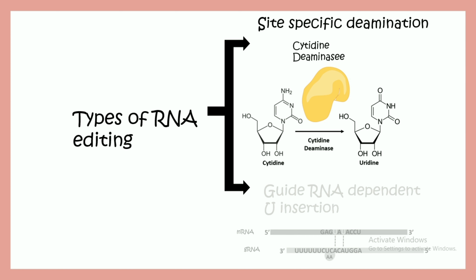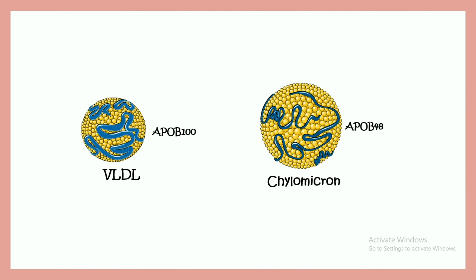This kind of example is found in our gastrointestinal system. We know in our GI system there are VLDL and chylomicron particles. All of these particles are lipoproteins, meaning they have lipid and protein in them.